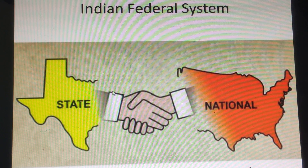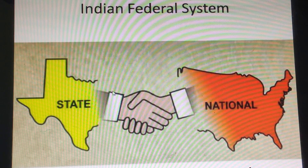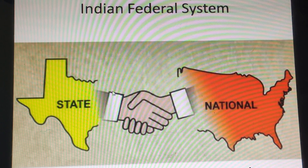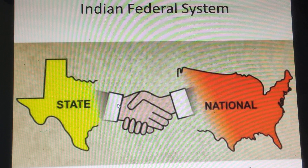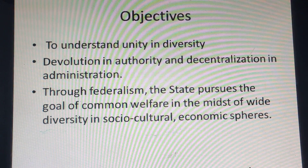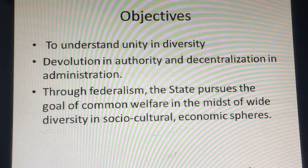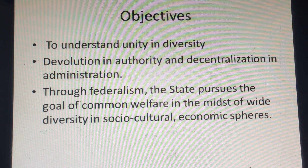Provinces means small units or states. India has 29 states and 9 union territories. In the federal system, the main objective is to understand unity in diversity, and how the devolution of authority and decentralization in administration takes place. In centralization, the total authority is in the hands of the centre with no division of powers. In decentralization, there is a division of powers between the units.